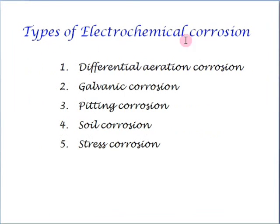The different types of electrochemical corrosion are differential aeration corrosion, galvanic corrosion, pitting corrosion, soil corrosion, and stress corrosion.